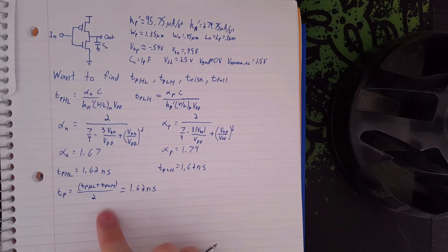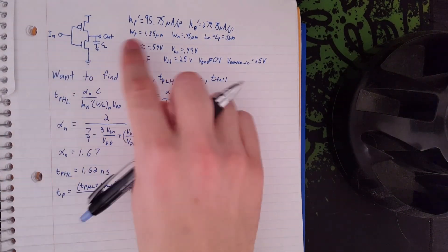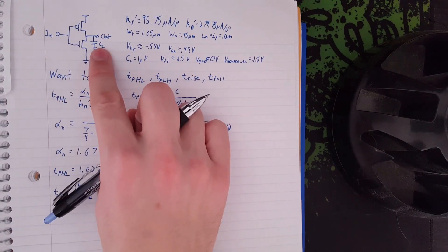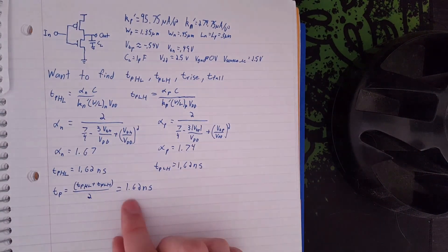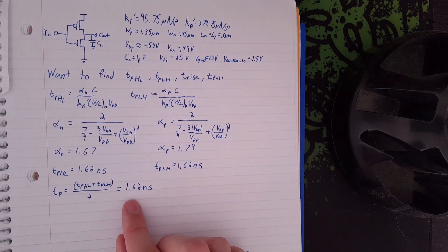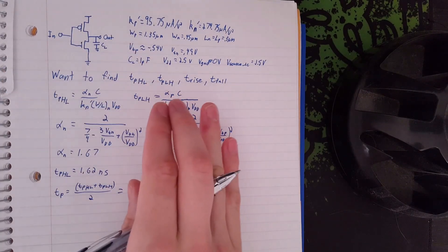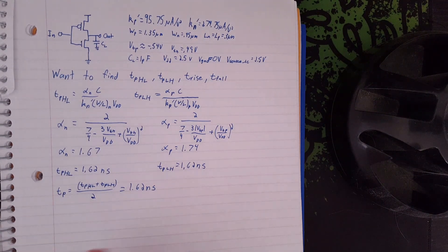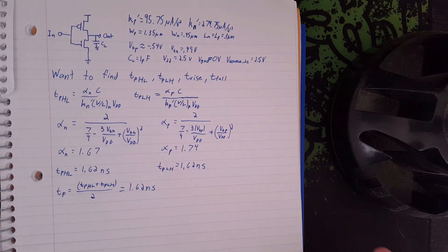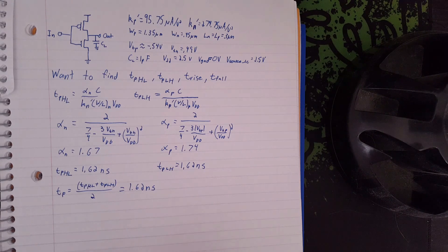So this is the delay time between when you put in the input and when you expect to see that at the output. It's going to take about 1.62 nanoseconds. This is important to know because if you're going to have, say, a bunch of inverters together or an inverter going into a NAND or a NOR or something like that, there's going to be a slight time delay.